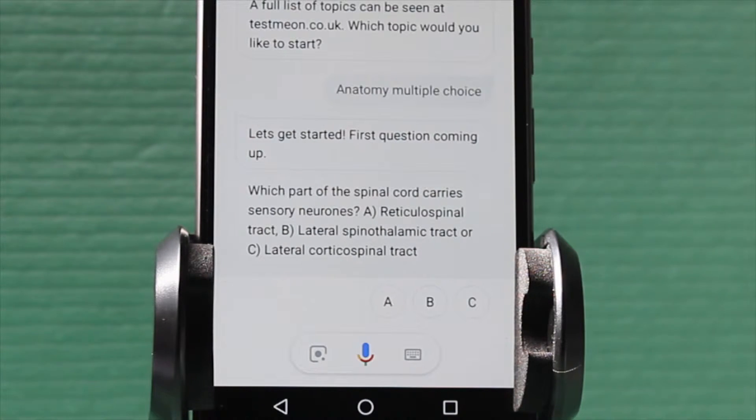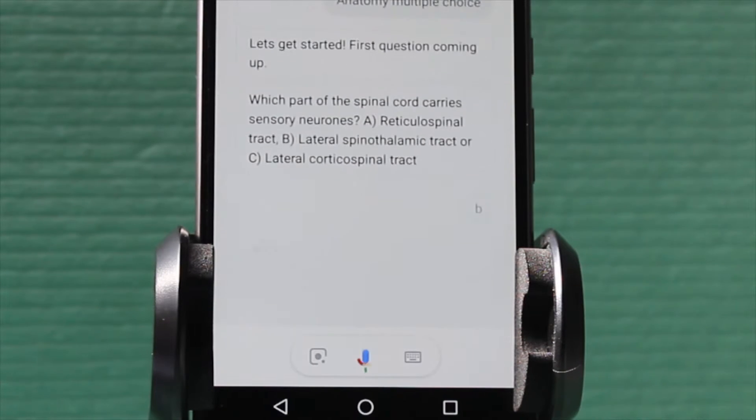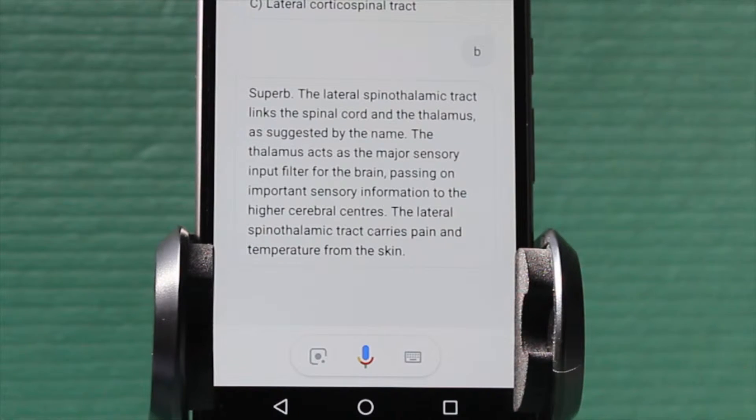Which part of the spinal cord carries sensory neurons? A) Reticulospinal tract, B) Lateral spinothalamic tract, or C) Lateral corticospinal tract. B. Superb!